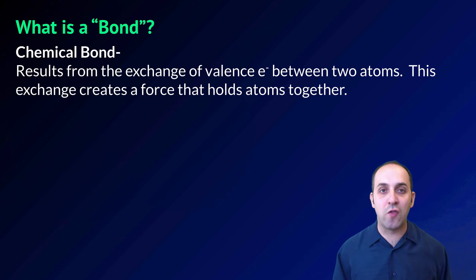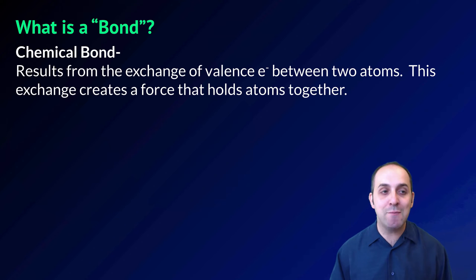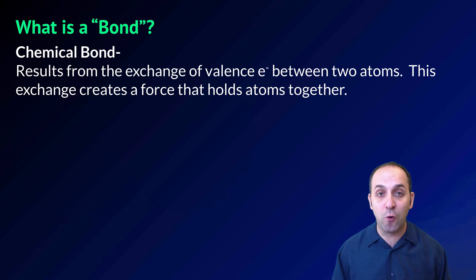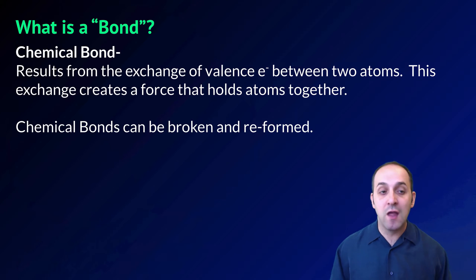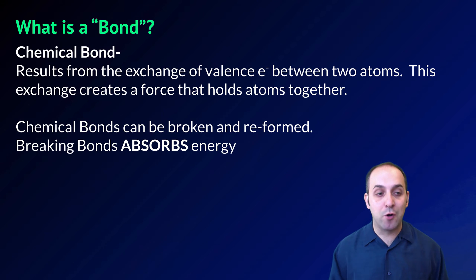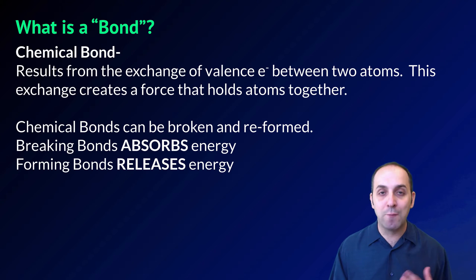We started with this discussion in our last video as well, but remember that a chemical bond results from the exchange of valence electrons between two atoms. This is going to create the force that holds the atoms together, which is the chemical bond. Chemical bonds can be broken and reformed. Breaking bonds absorbs energy and forming bonds releases energy.